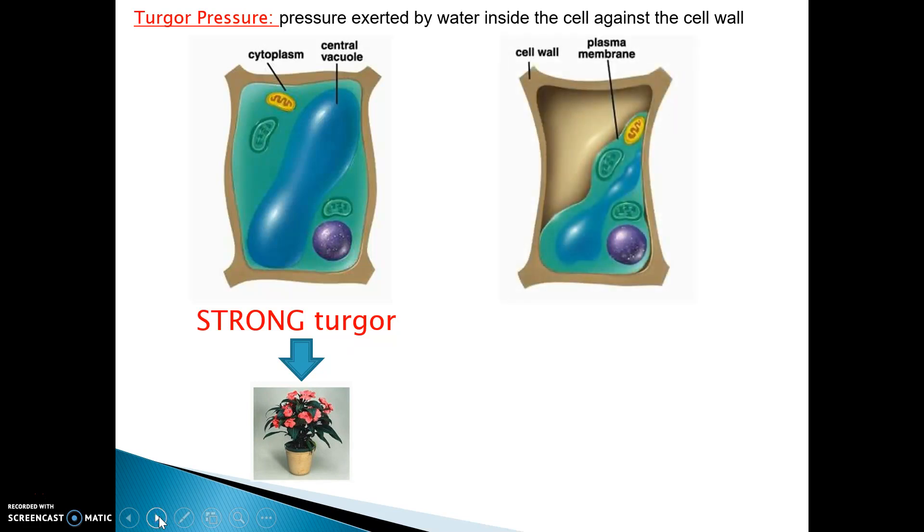On the other hand, in this picture, the vacuole is very deflated and does not have much water. This deflated vacuole does not forcefully push against the outer boundaries of the cell. We can say that this cell has a weak turgor pressure. When the turgor pressure is weak, the cell membrane and cell walls shrink inward. This creates a flimsy cell, which leads to flimsy plant tissue. This is why the entire plant in this picture is wilting.